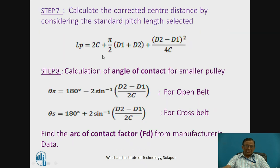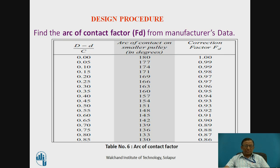Then we calculate the angle of contact for the smaller pulley using the equation: θ = 180° − 2 sin⁻¹((D2 − D1) / 2C) for the open belt system. Based on this angle of contact, a standard arc of contact factor is selected. The manufacturer's power rating data is tested at 180° as the standard angle; however, in practical applications this angle varies. To account for this variation, an arc of contact factor is applied — for example, if the angle is 160°, the factor FD is 0.95.